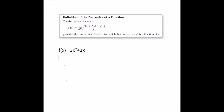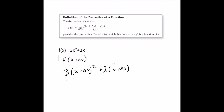First, we want to take the function and plug x plus the change of x into it. We get 3 times (x plus the change of x) squared, plus 2 times (x plus the change of x). We just plug x plus the change of x into each of the x parts of the function. Next, we subtract just the function of x.